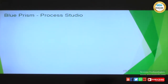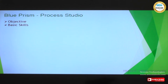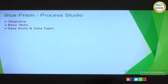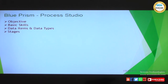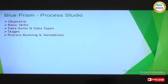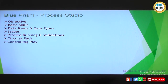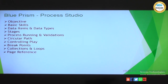So let's get started. Under this Process Studio we will be learning about what is the objective, what are the basic skills required, how the Process Studio looks, what are the keys available, what are the data items and data types used for storing data, what are the stages available in Process Studio and how we can use them, how to run a process, how to validate a process, and what is the circular path and controlling play keys.